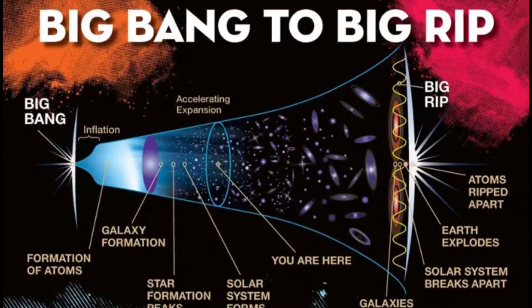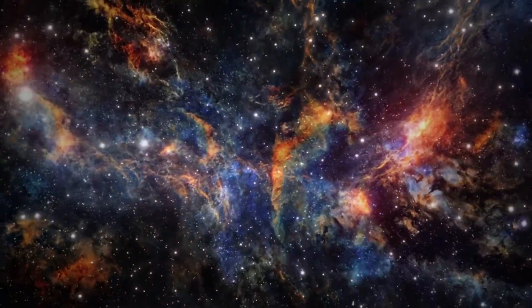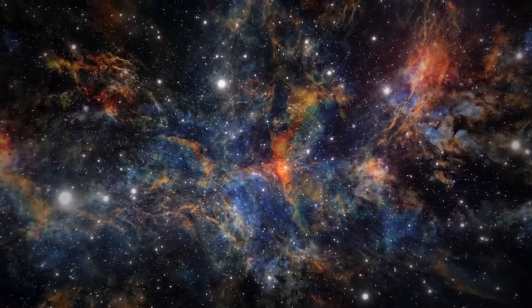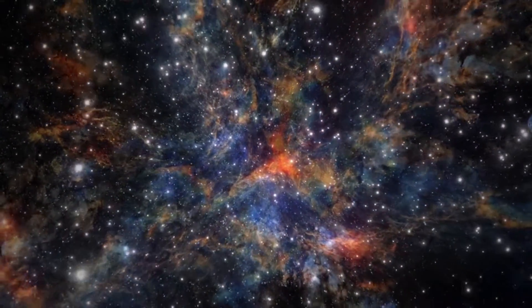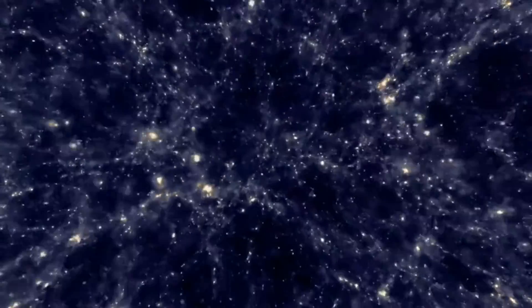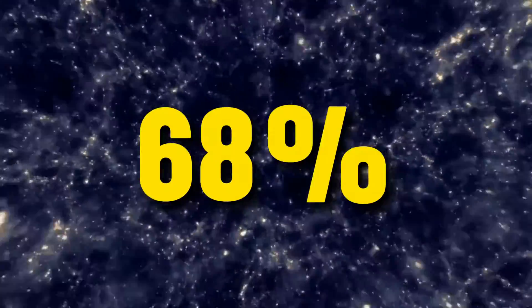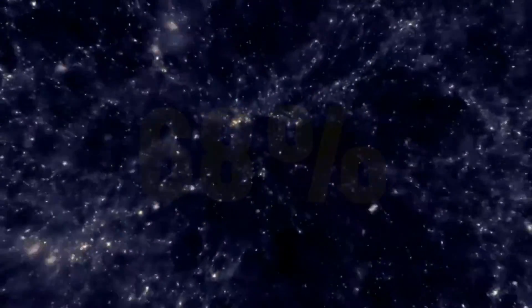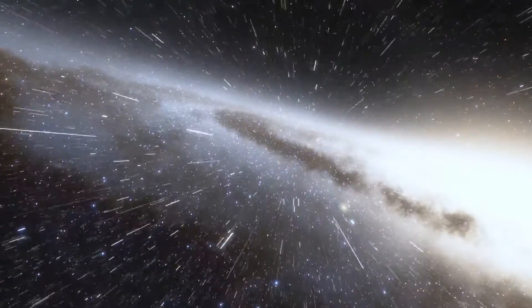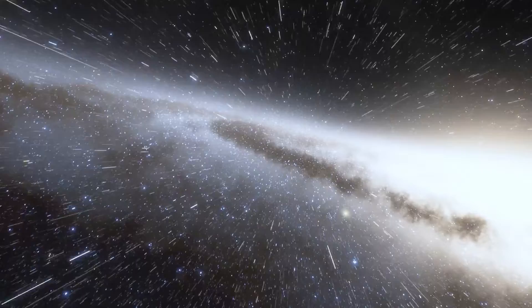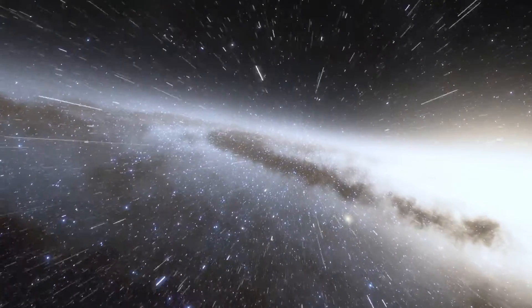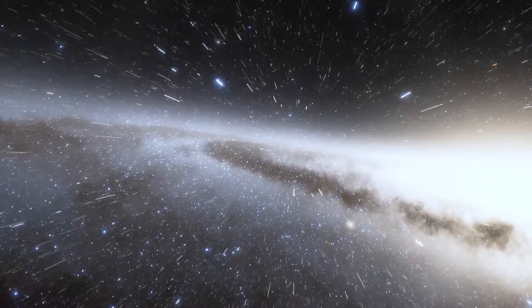Another theory is the Big Rip, where the expansion of the universe accelerates under the influence of dark energy, eventually tearing apart galaxies, stars, planets, and finally atoms themselves. This hypothetical end would occur if dark energy, which currently makes up about 68% of the universe, increases over time, leading to an ever-accelerating expansion that outpaces all forms of gravitational and nuclear forces.